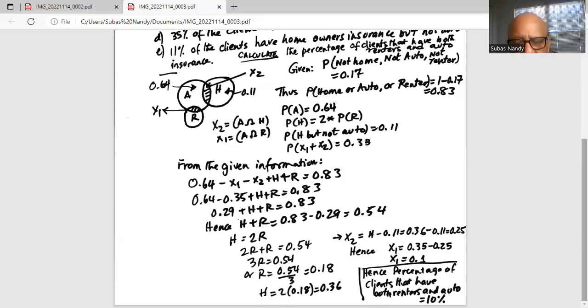Hence, the percentage of clients that have both renters and auto, that is the portion X1, is 10% or 0.1. So that's what we are required to find out, calculate the percentage of clients that have both renters and auto, which equals 0.1 or 10%.